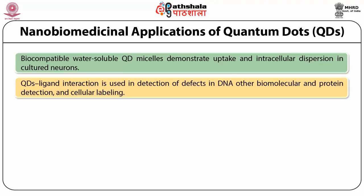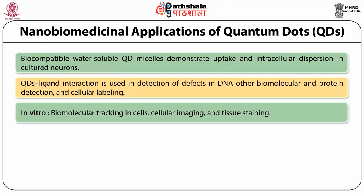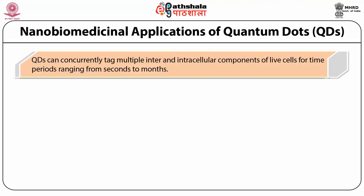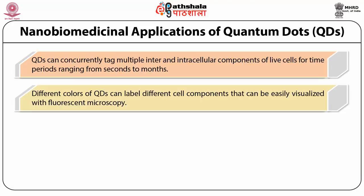Quantum dots have been used in in vitro and in vivo applications. In vitro applications include biomolecular tracking in cells, cellular imaging, and tissue staining. In vivo applications include quantum dot biodistribution by vascular imaging and tumor tracking and imaging. Currently, quantum dots provide the opportunity to simultaneously tag multiple inter- and intracellular components of live cells for time periods ranging from seconds to months, enabling both immediate diagnosis and longer prognosis to monitor any disease condition.